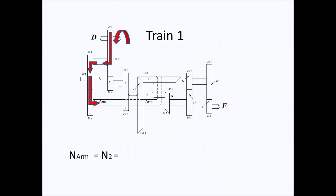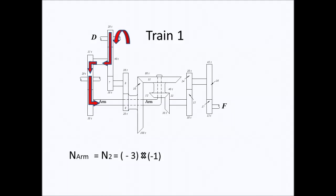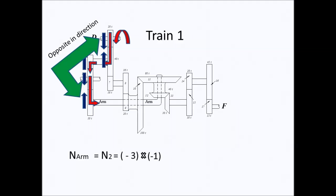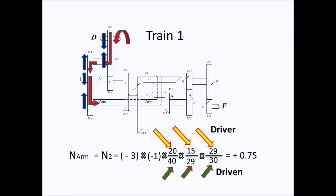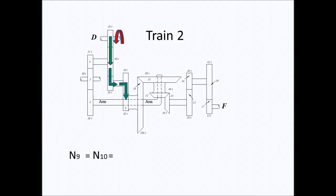First we analyze Train 1. Negative 3 is the rotation of D, and we multiply it with negative 1, which is derived from the relationship of the directional arrows — they are in opposite directions. We then multiply by the number of teeth of the driver gears over the number of teeth of the driven gears, giving us positive 0.75 as the rotation of the arm.